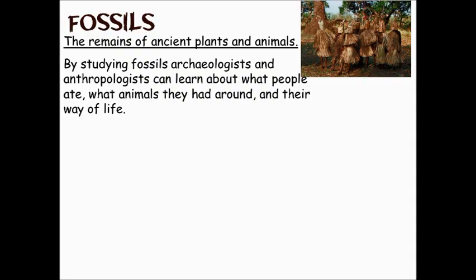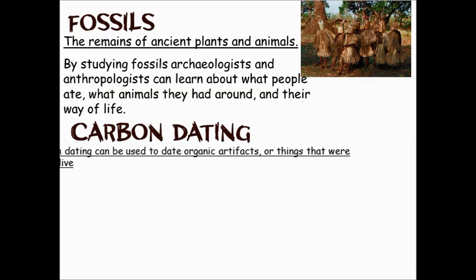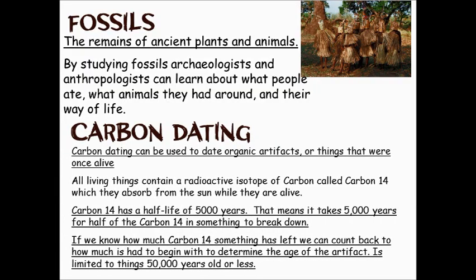How do we know how long ago some of these things are when we find them? One of the primary ways is through carbon dating. Carbon dating uses the radioactive isotope of carbon called carbon-14, and it's in all things that are organic — in other words, all things that were ever alive, plants and animals. When we die, carbon-14 has a half-life of 5,000 years — it takes 5,000 years for half of the carbon-14 in something to break down. If we know how much carbon-14 something has left, we can count back to determine its age.